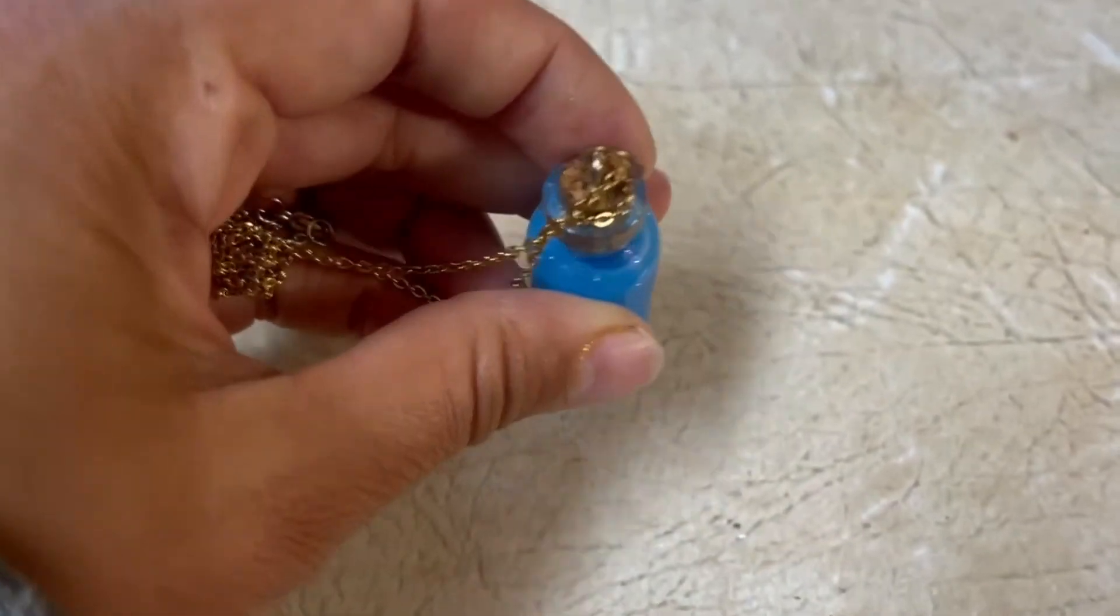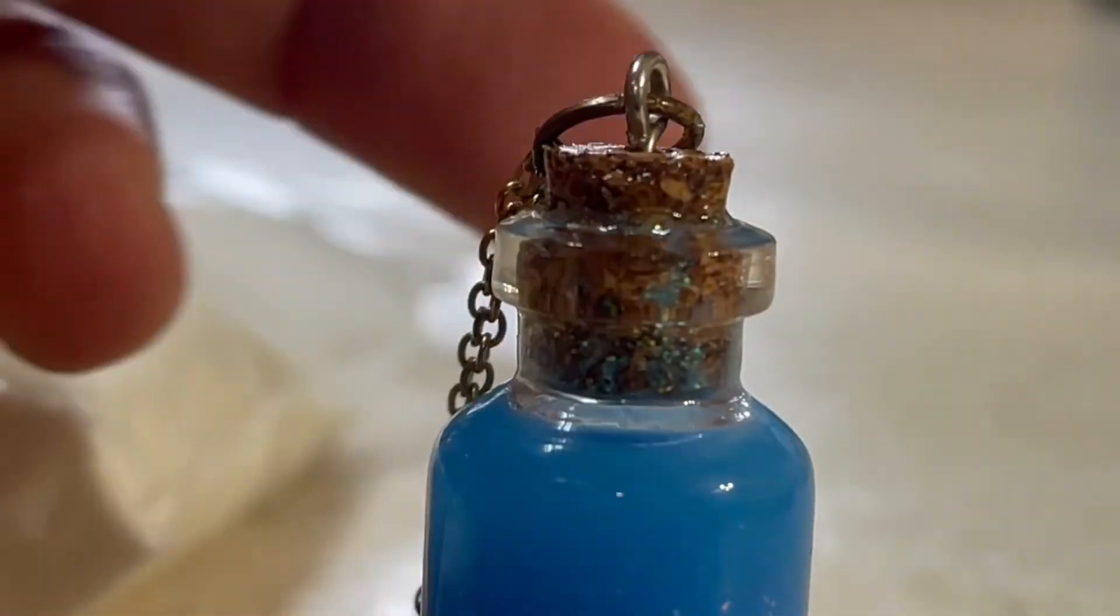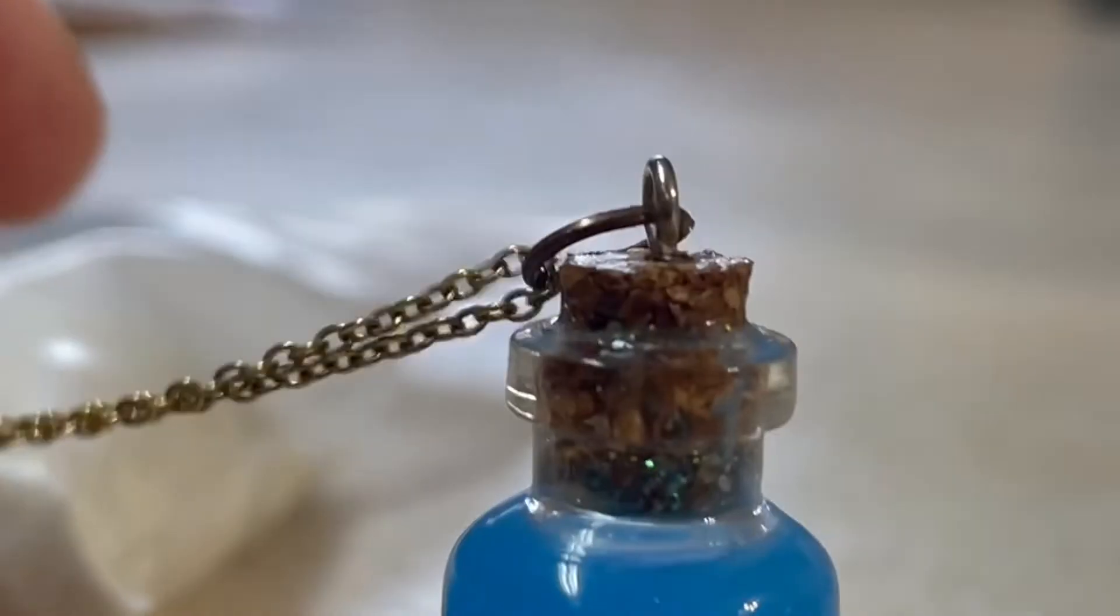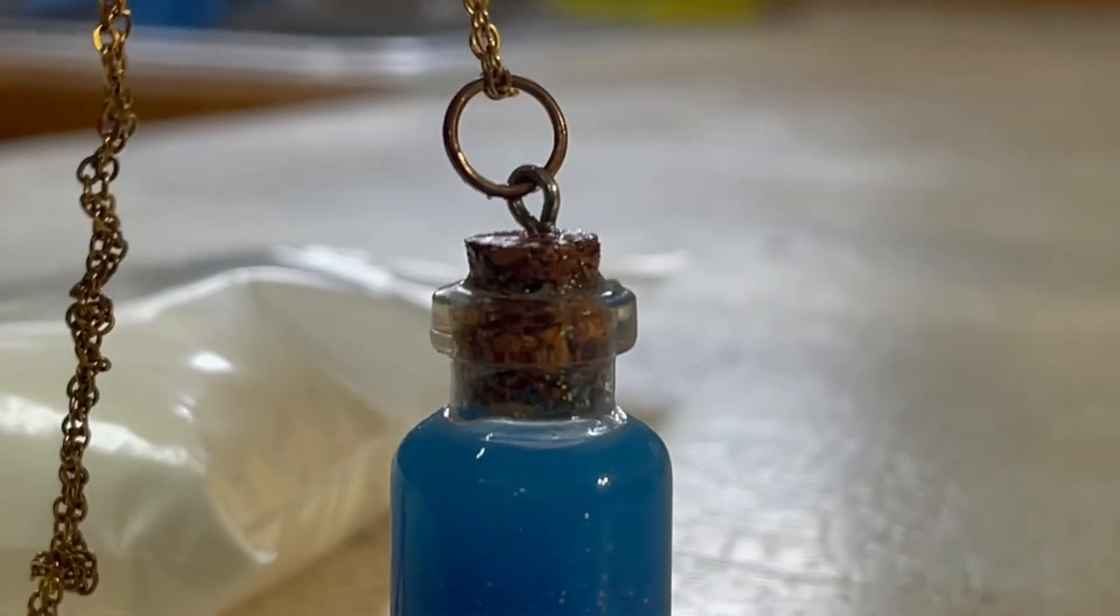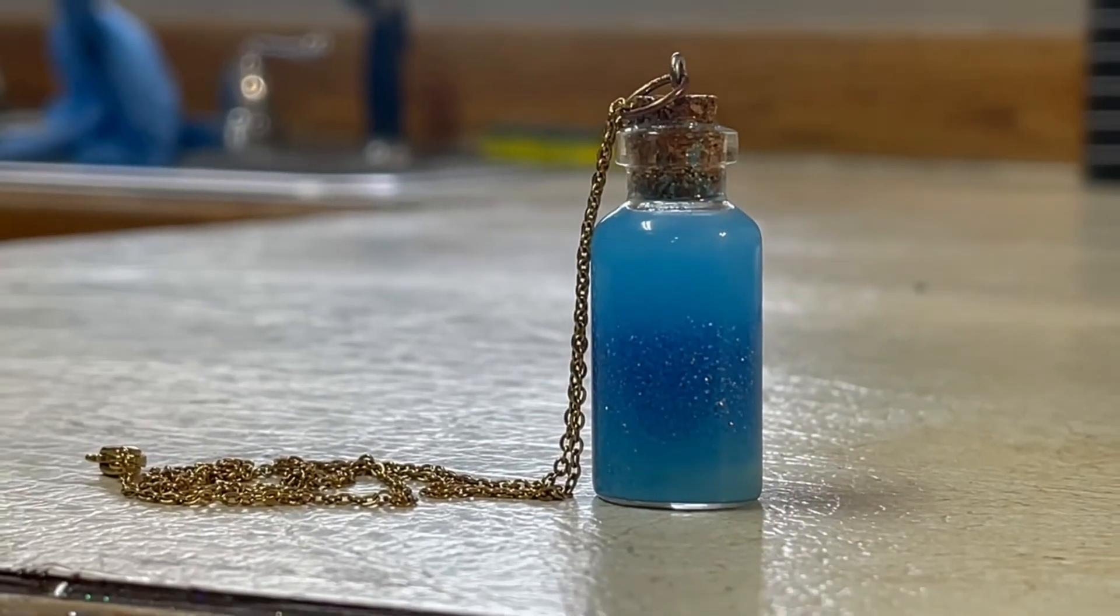Once you have that pin hook screwed onto the cork, you can add a chain by first adding a ring and then adding your chain onto that ring. I hope you like this video.